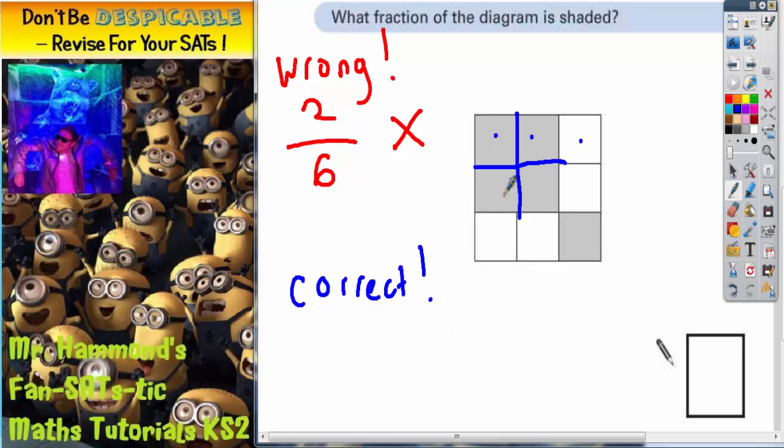So we've now got 1, 2, 3, 4, 5, 6, 7, 8, 9 squares. So it's out of 9.